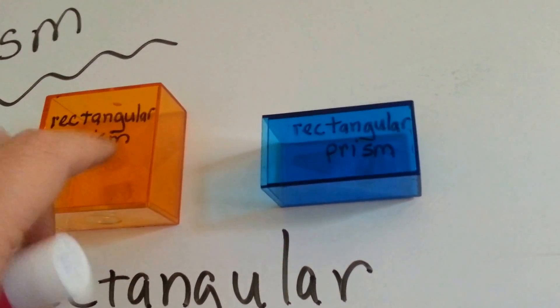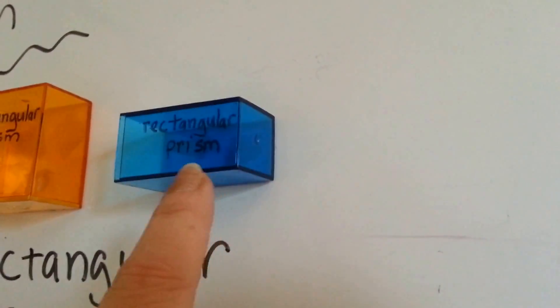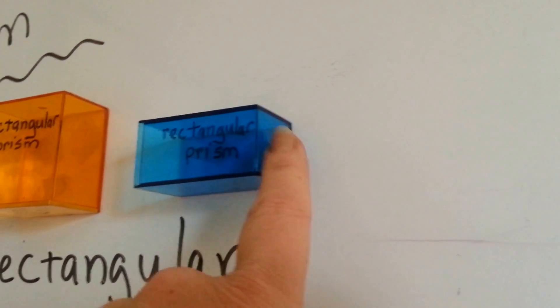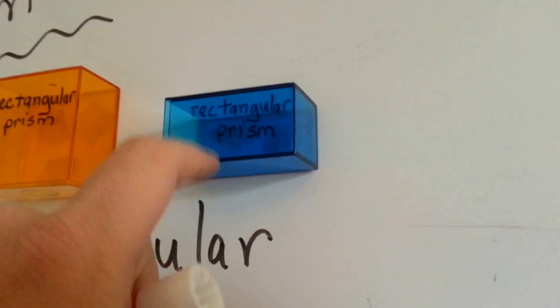This is the base, and this is the face. And this rectangular prism, here's a base, and this side's the base, and these are the rectangle faces. See?